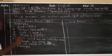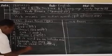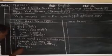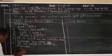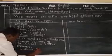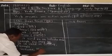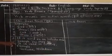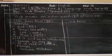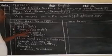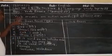The base form is used in orders. For example: 'Go home,' 'Write down.' These are commands where the base form of the verb is used directly.